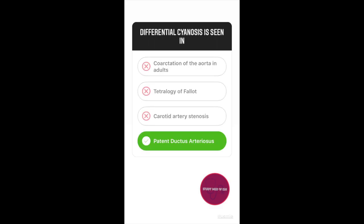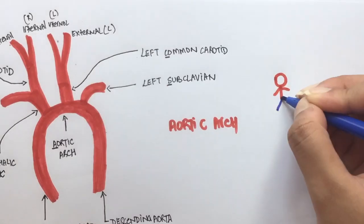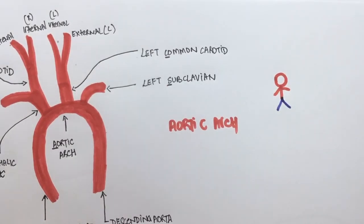Differential cyanosis occurs because the oxygen saturation is higher in the upper part of the body as compared to the lower part. This will lead to cyanosis here, while the upper part remains relatively normal.